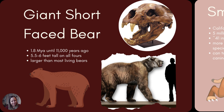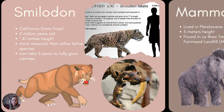The giant short-faced bear is larger than any living bear on Earth right now. They lived from about 1.8 million years until around 11,000 years ago, when there was a pretty large extinction event at the end of the Ice Age. On all fours, they stand at five and a half to six feet tall. They are called the giant short-faced bear because not only are they giant, but they also have a very short snout, making them more distinct from bears like the black bear and the grizzly bear.